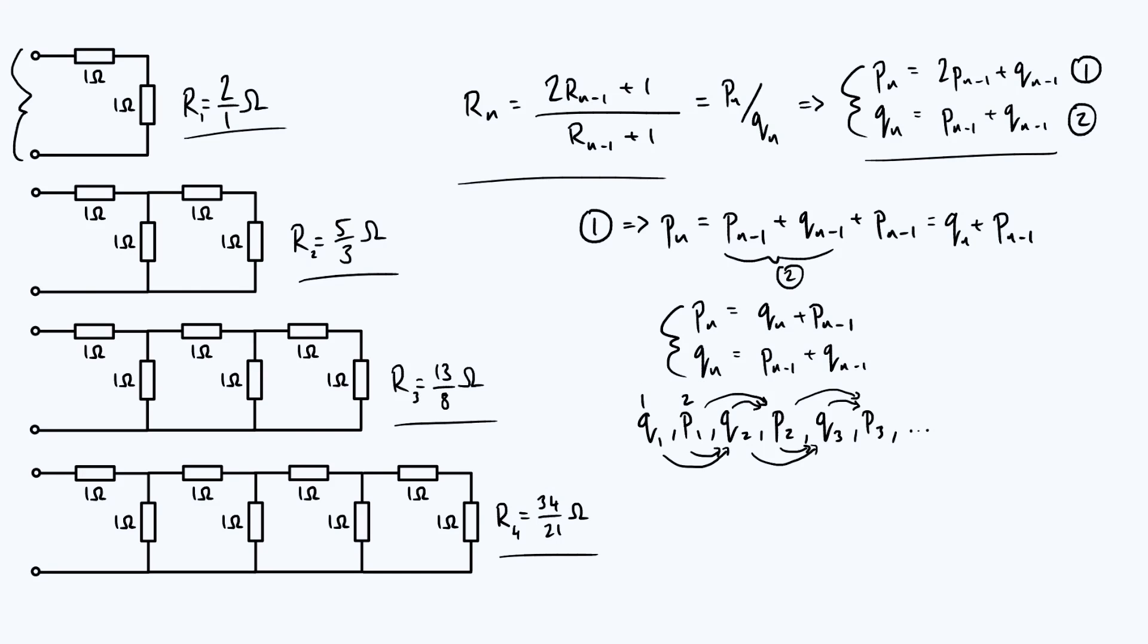So with that connection to the Fibonacci sequence in mind, a sensible alternative notation to use for that sequence would be, let me just call the first number F1, F2, and so on, all the way up to F6 in this case, and beyond. So I'm saying F1 is the first Fibonacci number, F2 is the second Fibonacci number, and so on.